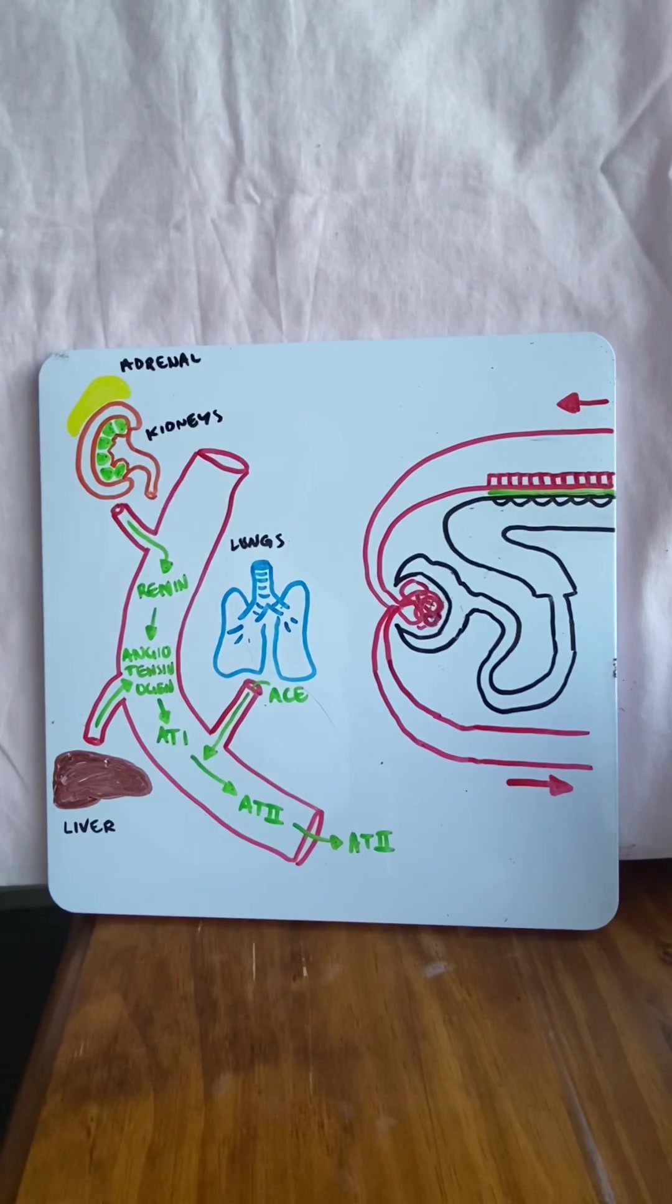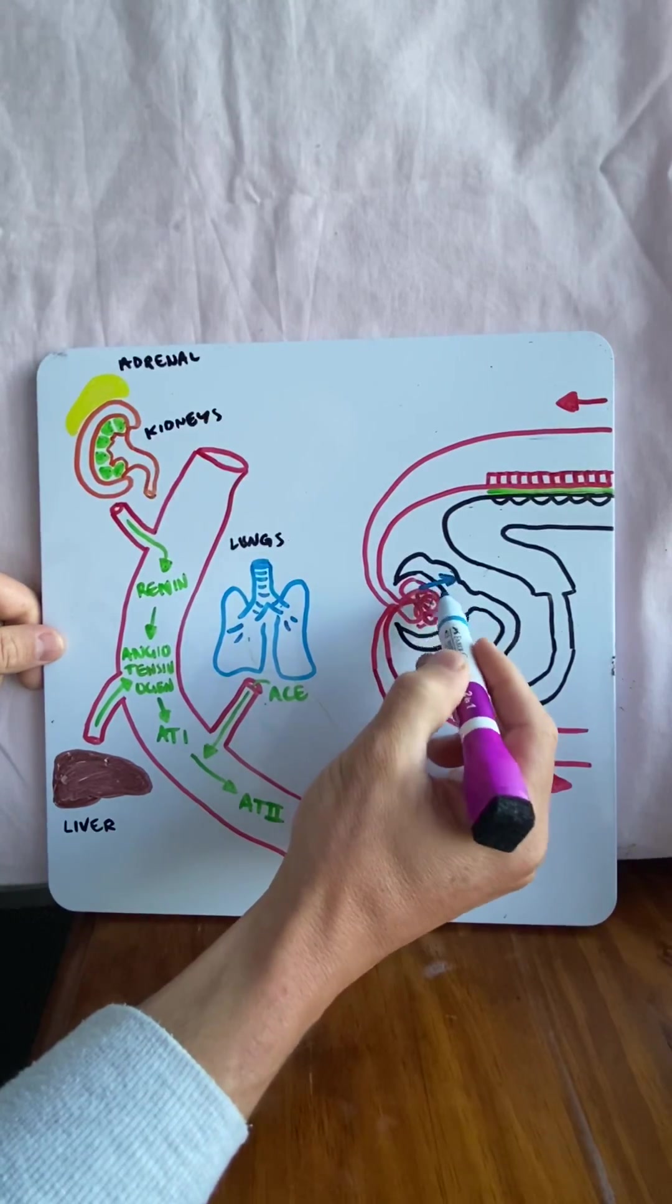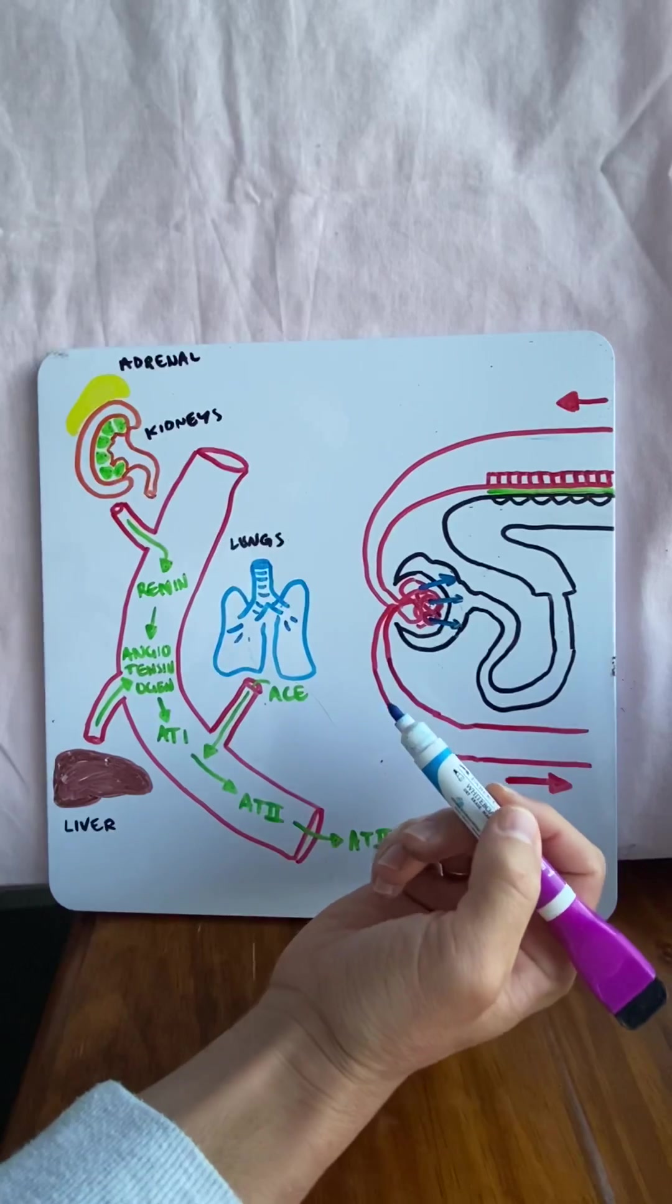So when your blood pressure and blood volume drops, your kidneys are responsible for boosting blood pressure and blood volume back up. Why? Because your kidneys need to filter 120 mils of blood every single minute. If it doesn't do this, things accumulate in the blood, not good for you.